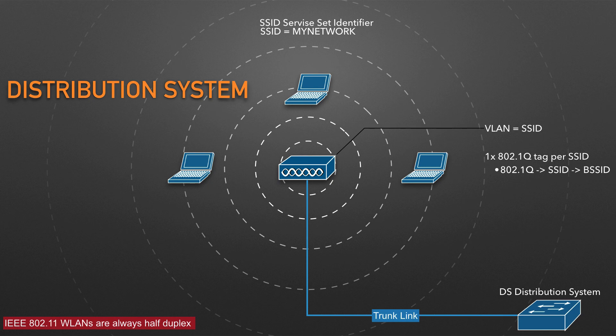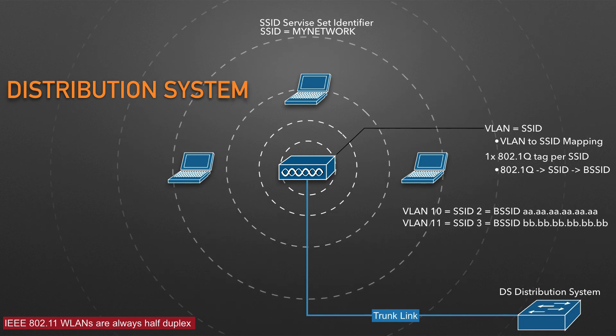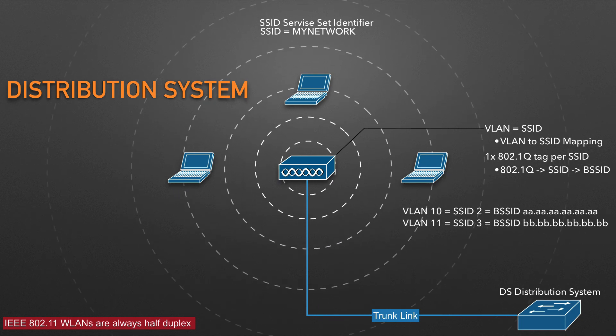In effect, when an AP uses multiple SSIDs, it is trunking VLANs over the air, and over the same channel, to wireless clients. The clients must use the appropriate SSID that has been mapped to the respective VLAN when the AP was configured. The reason is that the AP uses the same transmitter, receiver, antennas, and channel for every SSID that it supports — all of those clients must share the same AP's hardware.